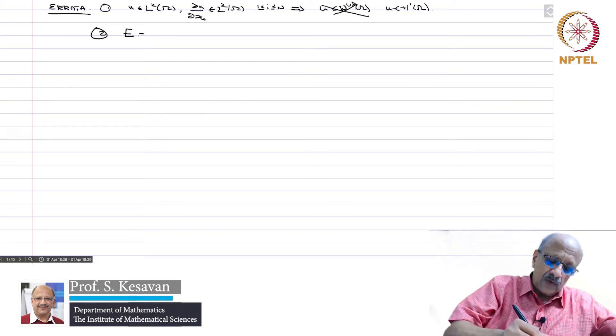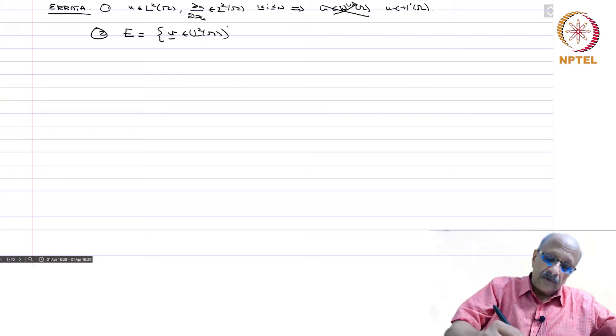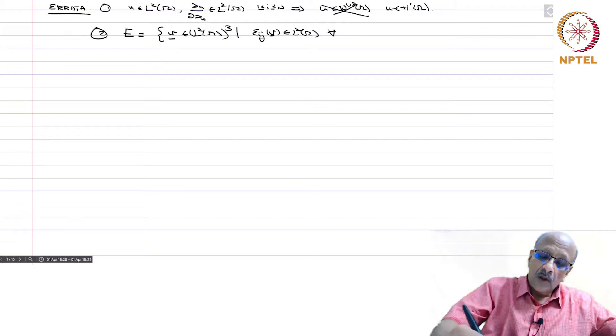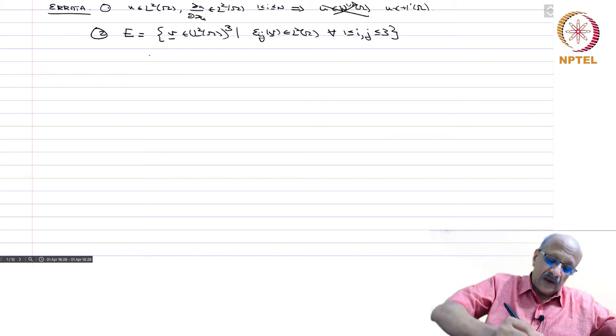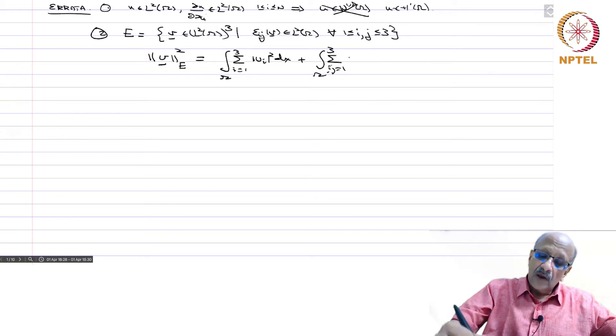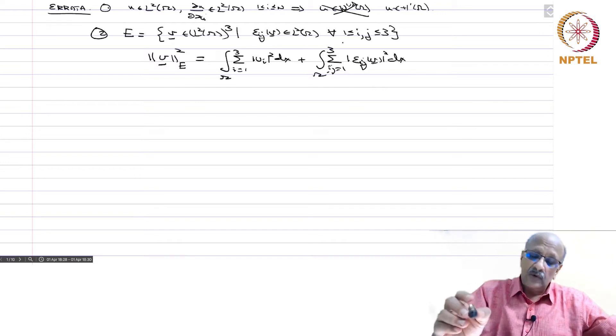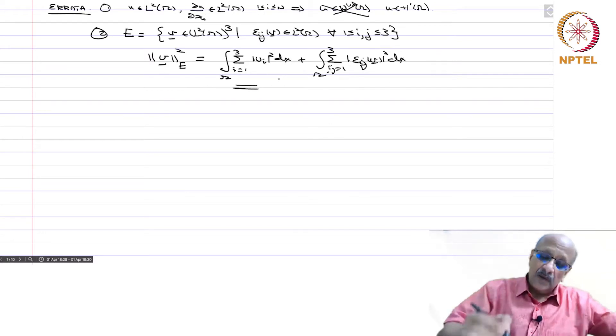Second correction is when we defined this in proving constant equality, we defined the space E which is the set of all v in L2 of omega power 3 such that epsilon ij of v is in L2 of omega for all 1 less than equal to ij less than equal to 3. And here I defined norm of v in E square. The correct expression is this equals integral on omega sigma i equals 1 to 3 mod vi square dx plus integral on omega sigma ij equal to 1 to 3 mod epsilon ij v square dx. In what I wrote last time, the sigma ij equals 1 to 3 was missing. So that has to be added. These are the minor corrections which I wished to make.